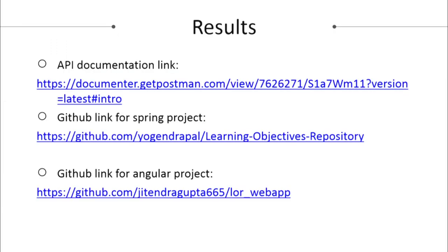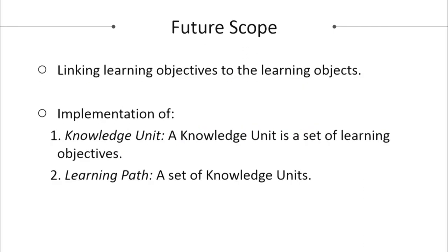We have created 95 APIs in total. The API documentation link contains all the details on how to access the APIs, and links to the source code are also provided. For future possibilities, we can link learning objectives to learning objects — learning objects are basically units designed to achieve a particular learning objective.